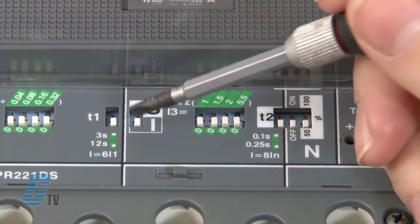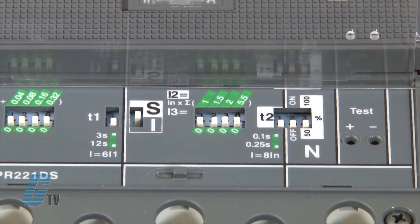When the S function is selected, the dip switches at T2 will determine whether the trip time is set to one tenth of a second or a quarter of a second.